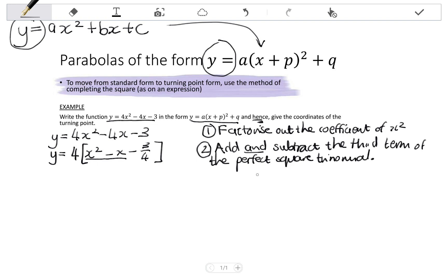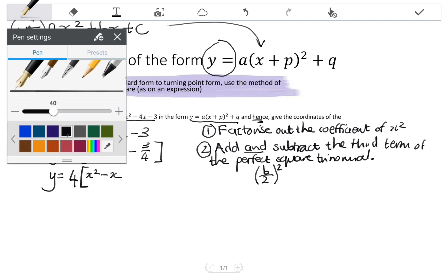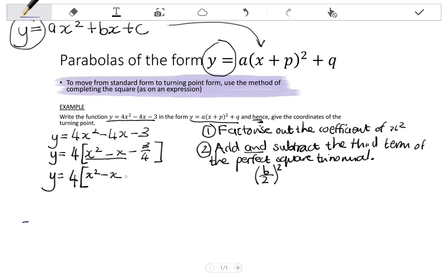And I hope that you remember how to find this third term. We take our b value, which is the coefficient of x. We halve it, so that means we divide it by 2, and then we square it. So we're going to be adding and subtracting this value. So we have y equals 4, then I have my square brackets, x squared minus x. Now my third term, let me just change the color slightly.